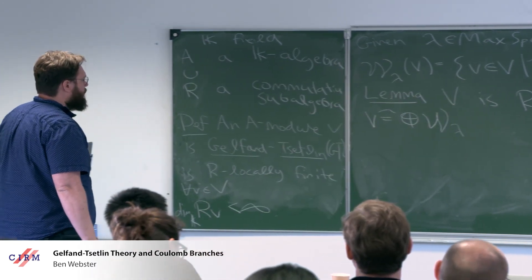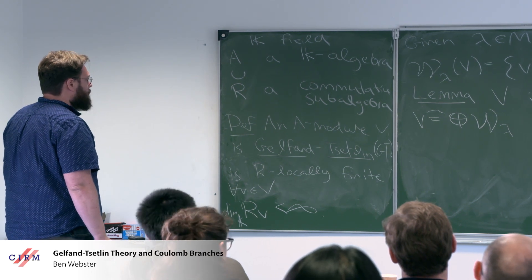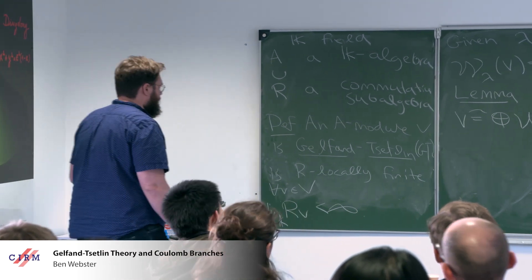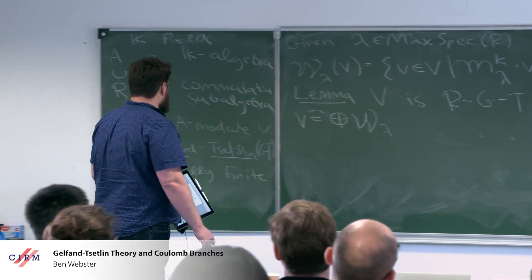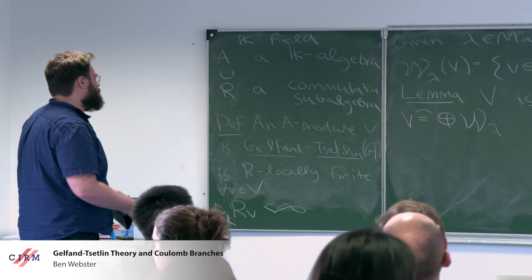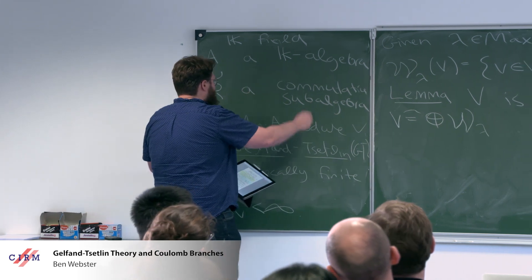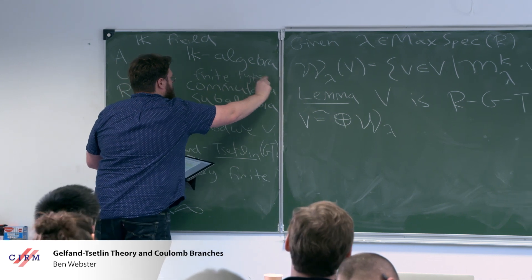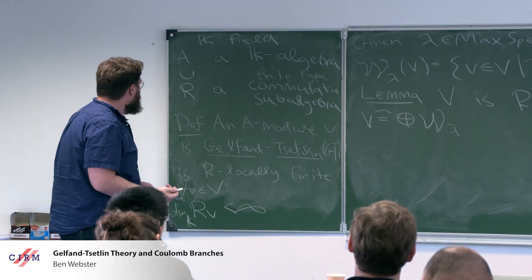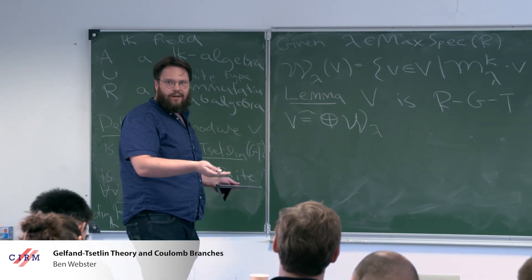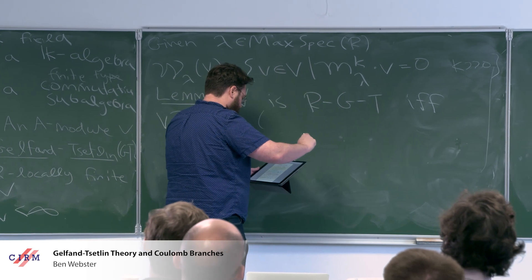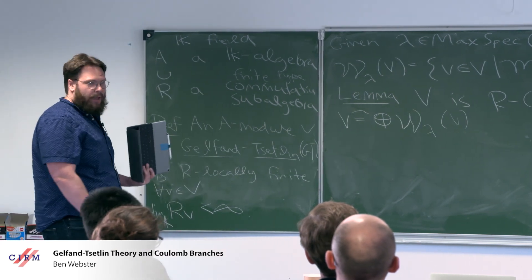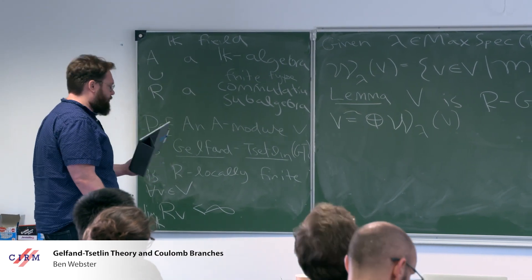I want R to be finite type. If R is finite type, then this quotient is a finite extension of K — finitely generated as a K-algebra. So those are the conditions.